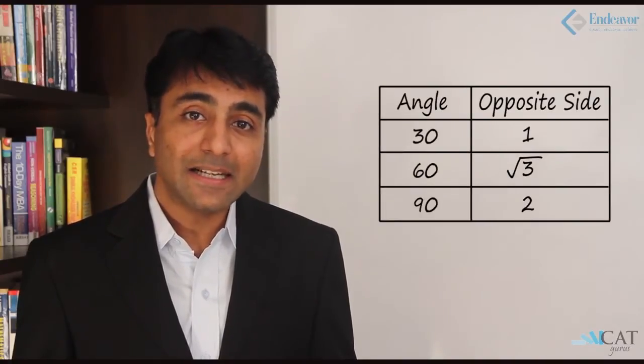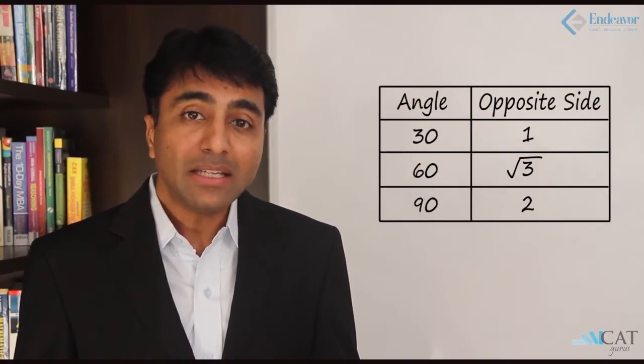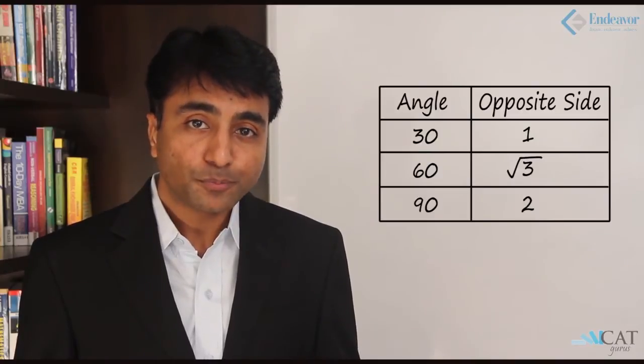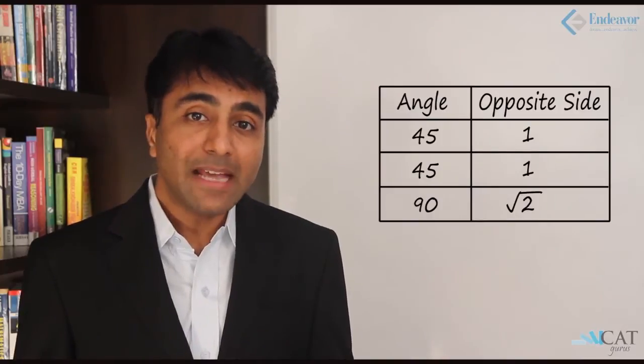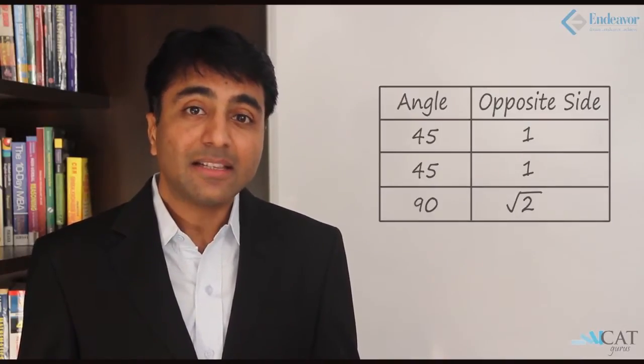The first ratio is the 30-60-90 triangle. In a right angle triangle when one angle is 30 degrees and the other is 60 degrees, the ratio of the sides opposite to 30, 60, and 90 degrees is 1 : √3 : 2. The second ratio is the 45-45-90 triangle — an isosceles right angle triangle where the sides are in the ratio 1 : 1 : √2, meaning sides opposite to 45 degrees are equal and the side opposite to 90 degrees is √2.